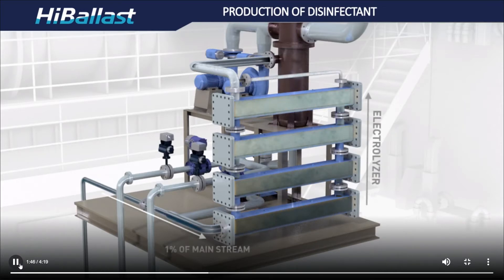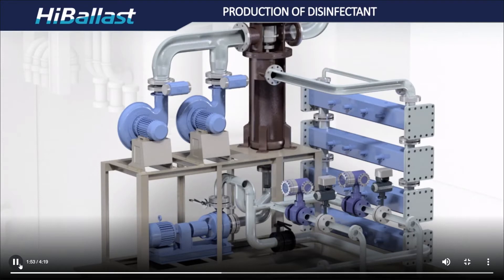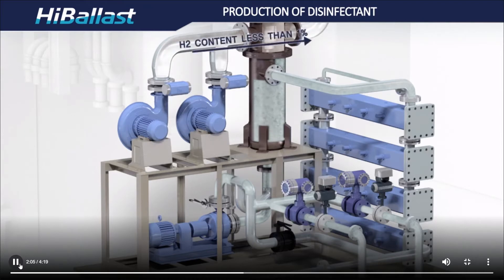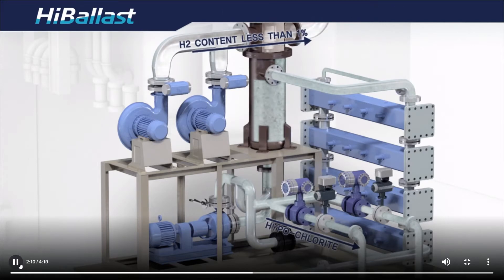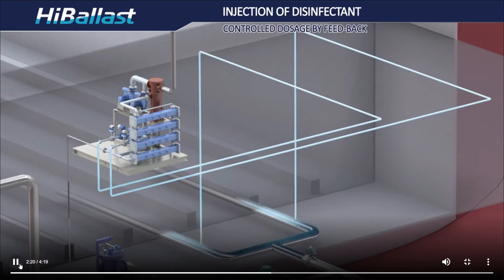To generate disinfectants, only one percent of the whole ballast water is supplied to the electrolysis unit. Sodium hypochlorite, a disinfectant, is produced in the process of electrolysis. Hydrogen gas, as a by-product, is generated, separated at a vapor-liquid separator, diluted 100 times by an air blower, and discharged forcefully to a safe area atmosphere.